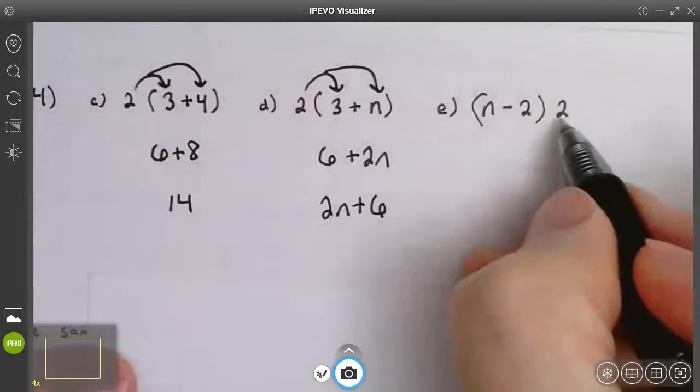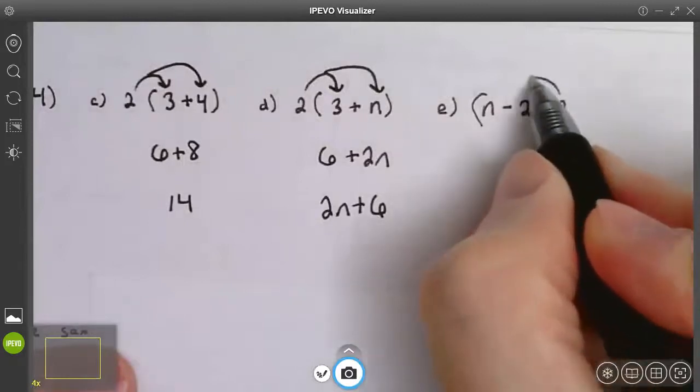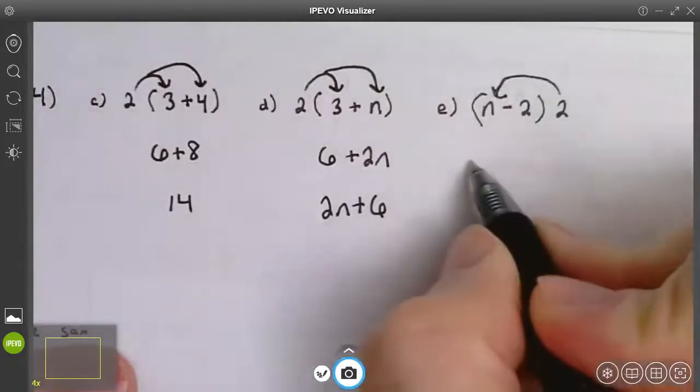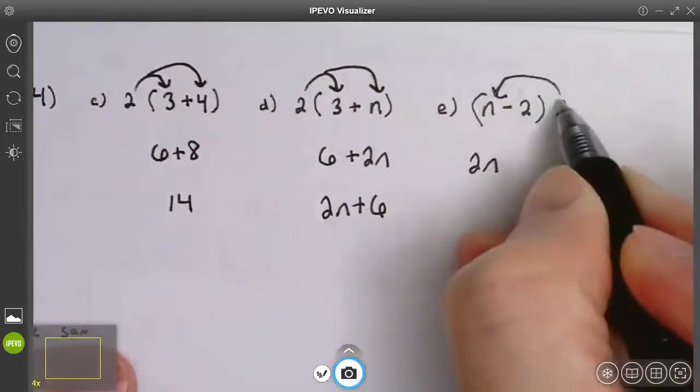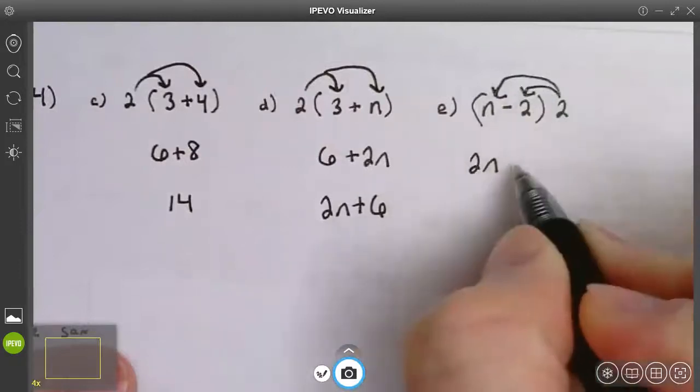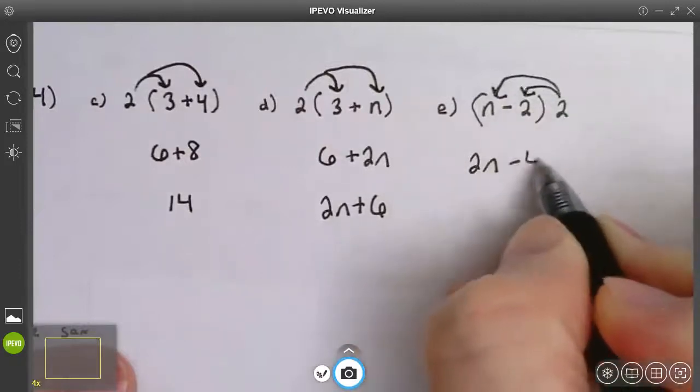Your distributor could be on the right side. 2 times n is 2n. 2 times negative 2 is negative 4.